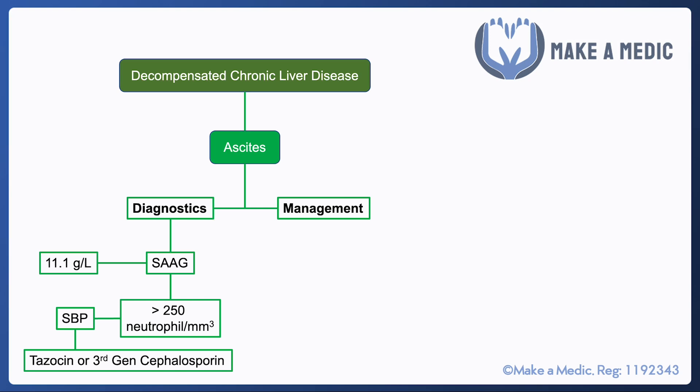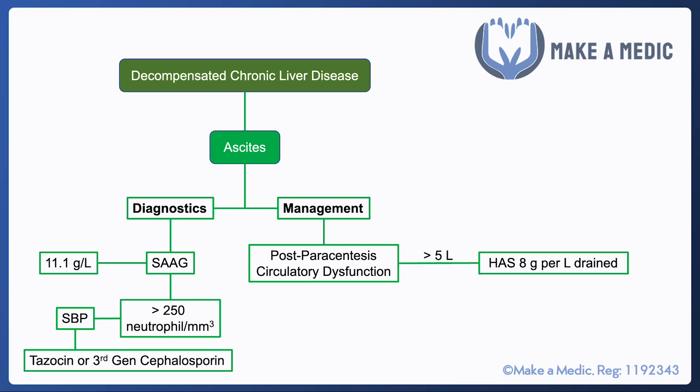The management of ascites usually requires the insertion of an ascitic drain to remove the excess fluid, but there are a couple of complications worth being aware of. First, post-paracentesis circulatory dysfunction, in which the removal of a large volume of ascites can lead to haemodynamic shifts causing the patient to drop their blood pressure. To prevent this, if an ascitic drain is expected to drain more than five litres, human albumin solution should be given at a rate of eight grams per litre drained.